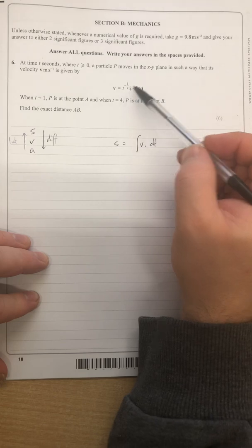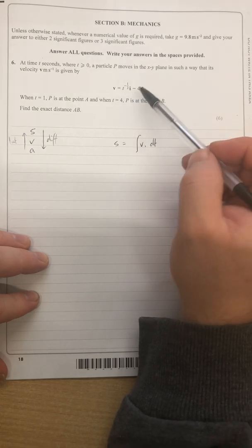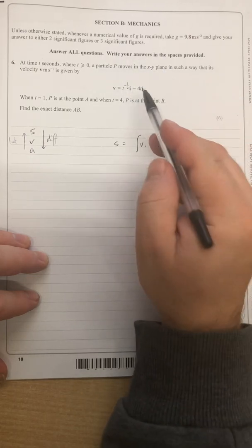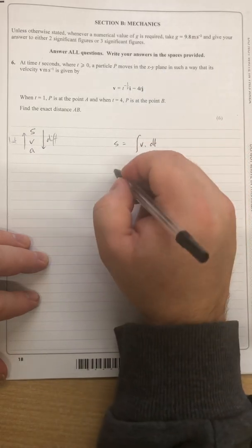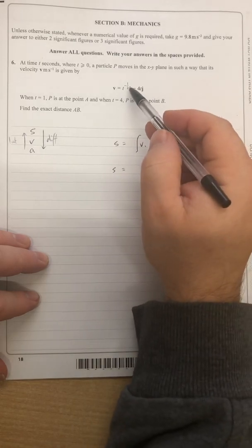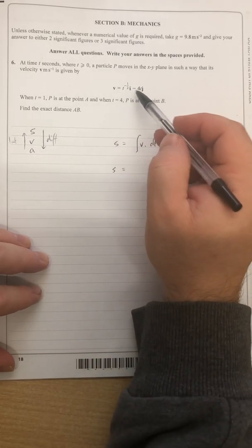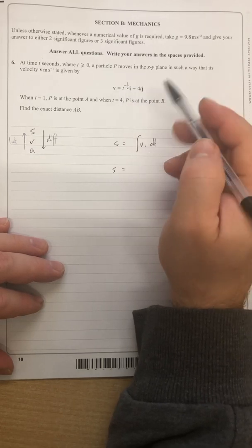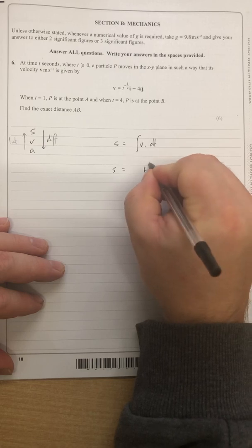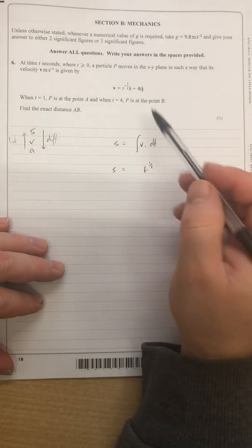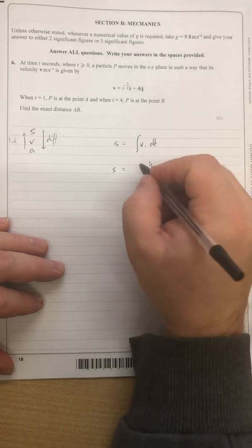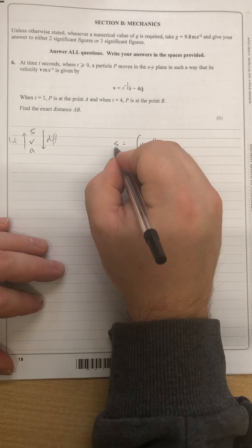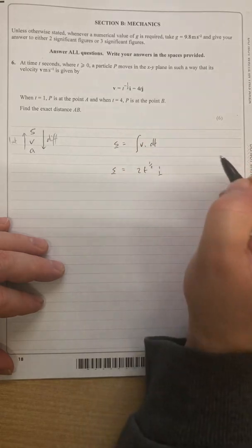Recall that if you've got a vector notation here, you can differentiate and integrate separately. So do this one separately, do that one separately. Let's see then, s would be integrating that is raising the power by one and dividing by the new power. So raise that by one, I get positive a half. So I'd have t to the power of positive a half, and dividing by a half is the same as timesing by two, and that's i. Remember all these things really are vectors so they should have an underbar there.